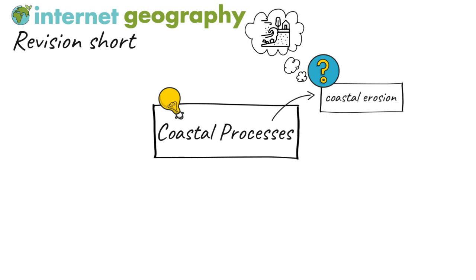There are three main processes of coastal erosion. Hydraulic action involves waves hitting the base of a cliff, causing air to be compressed in cracks, joints and folds in bedding planes, causing repeated changes in air pressure. As air rushes out of the cliff when the wave retreats, it leads to an explosive effect as pressure is released.